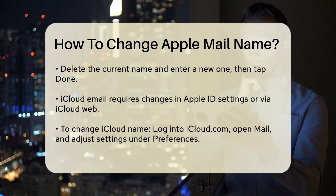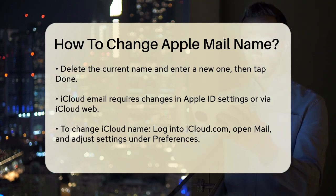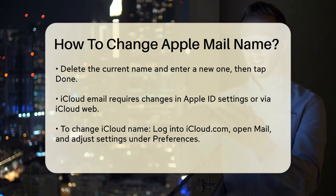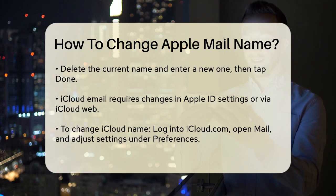Go to iCloud.com, log in, and open the Mail app. Click the small gear icon at the top, choose Preferences, and go to the Accounts tab. Select your iCloud email or alias and enter a new name, then click Done.